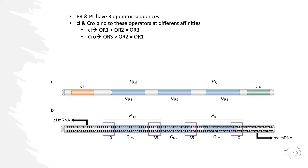If PR expresses Cro and Cro binds with highest affinity at OR3, it is essentially blocking PRM, since that's where PRM is located. When RNA polymerase is introduced, it can't go to PRM because it's blocked by Cro. The only available promoter is PR, so it binds there, expresses rightward, makes more Cro, and we stay in the lytic cycle. That's Cro doing its job — it wants to maintain lytic growth.